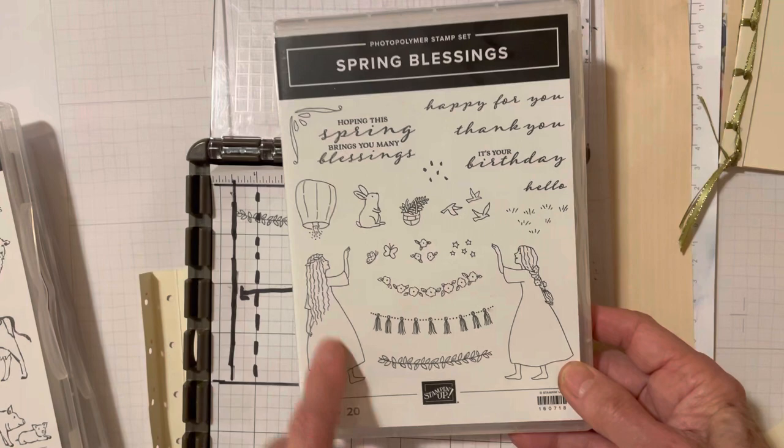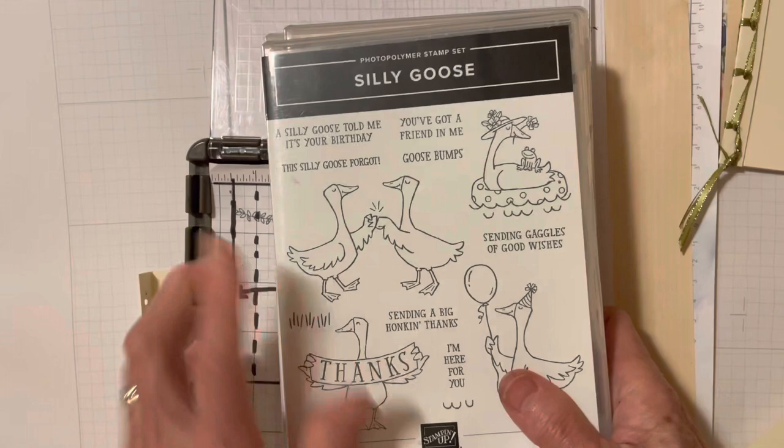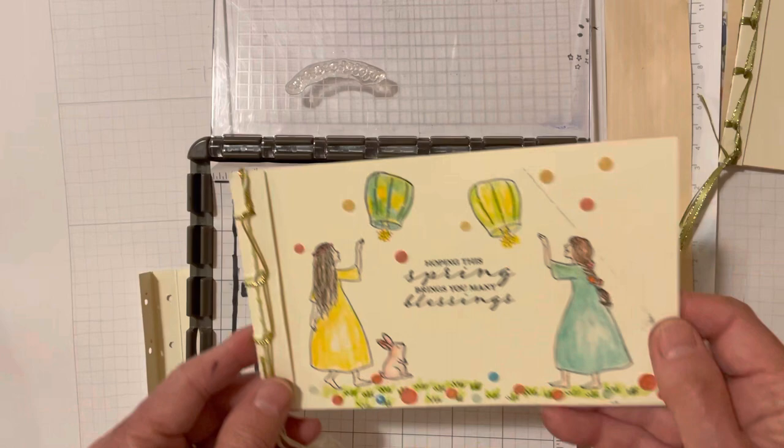This is how the set looks. It's got all kinds of fun things on it. You could also use On the Farm to make a cute little book or Silly Goose. So I'm going to do those next. But right now, I'm going to show you how I made my little book. And you might want to make one as well.